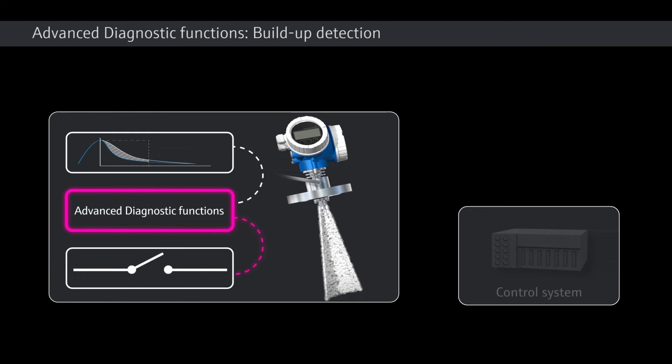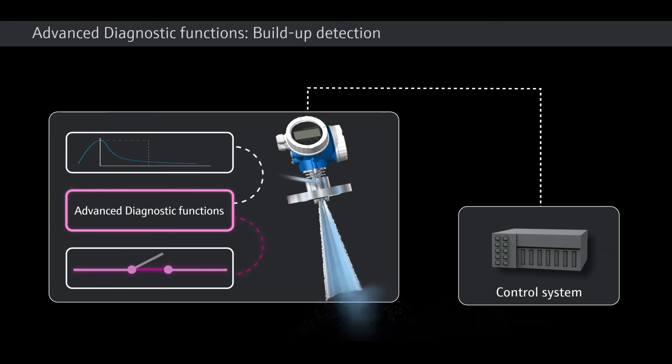Micropilot monitors the near distance and issues the status signal as soon as the defined threshold value has been reached. Programming can optionally be performed in the control system using the raw signal provided by Micropilot.